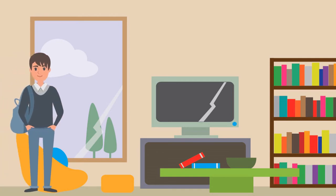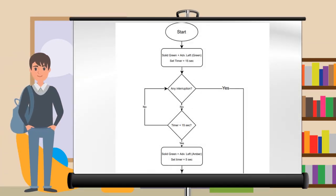Now this is our flowchart. We start off with the solid green plus advanced green left arrow for 15 seconds. We then go on to check if there is any interruption, and if there is no interruption, we check if the 15-second timer is complete. If it is not, we go back to the interruption.